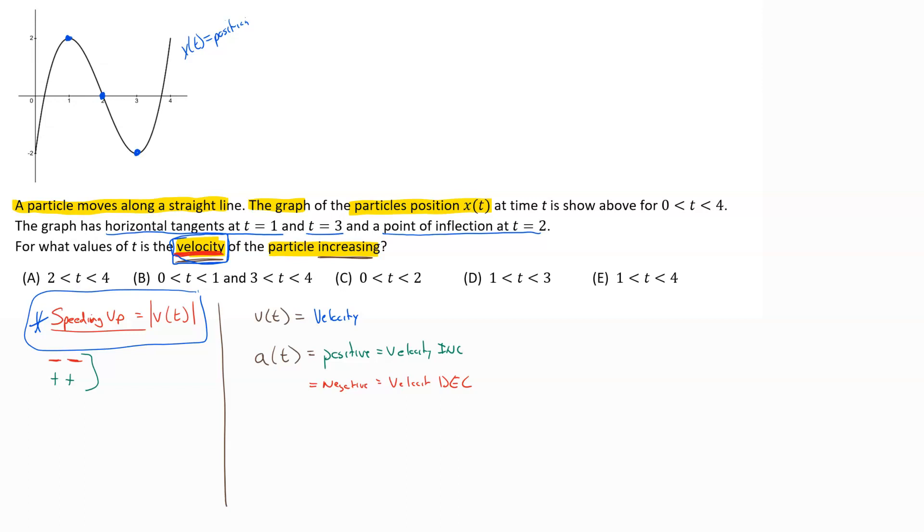To get to that point, you've got to understand that physics relationship that they always want us to know. If our original function is our position function, then the derivative of position is equal to velocity.